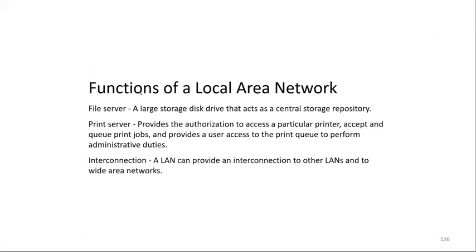The functions of a local area network: the first is it acts as a file server, where a large storage disk drive acts as a central storage repository for storing files. The next is print server, which provides authorization to access a particular printer, accepts and queues print jobs, and provides user access to the print queue to perform administrative duties. A LAN can also provide interconnection to other LANs and to wide area networks, so two LANs can be connected to each other.